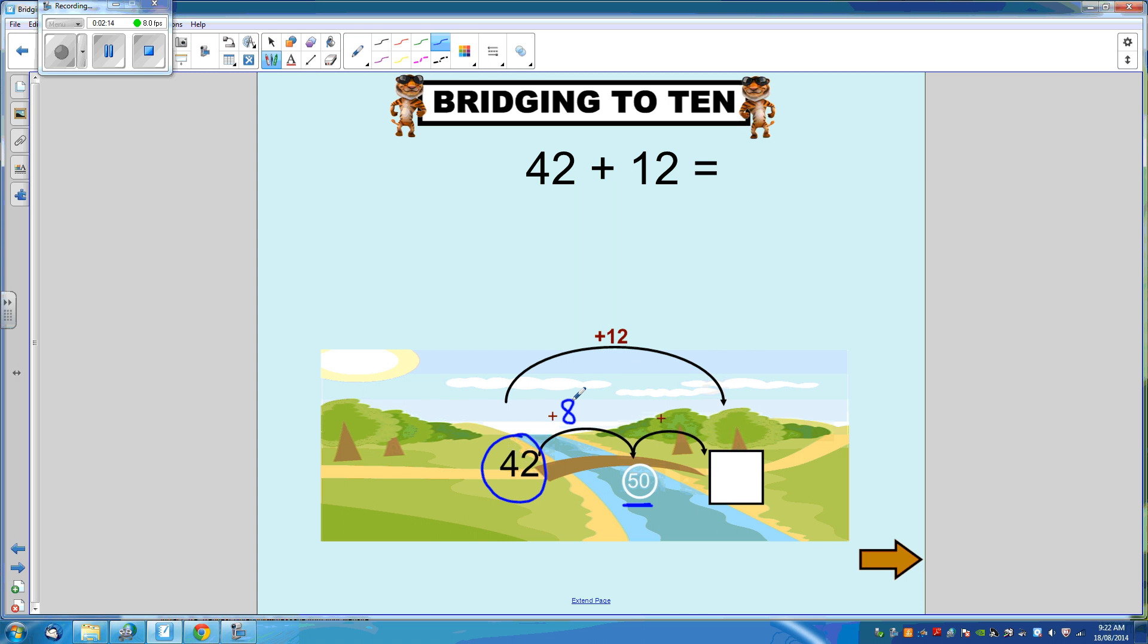We need to add 12. So 8 plus what equals 12? 8 plus 4 equals 12. So 50 plus 4 is 54. Our answer to 42 plus 12 is 54.